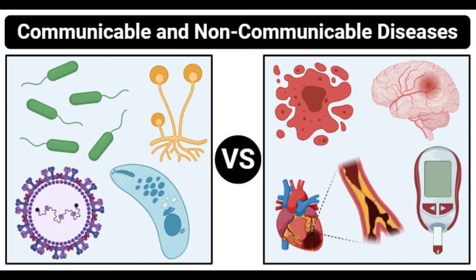Most non-communicable diseases are caused due to an unhealthy diet and lifestyle. However, other causes like mutations, heredity, and environmental changes might also trigger some non-communicable diseases. Unlike communicable diseases, non-communicable diseases are not seasonal and might occur at any time of the year. Diseases like cancer and diabetes might even be hereditary, inherited from parents to offspring. These diseases are more chronic as the symptoms appear gradually and are difficult to diagnose.